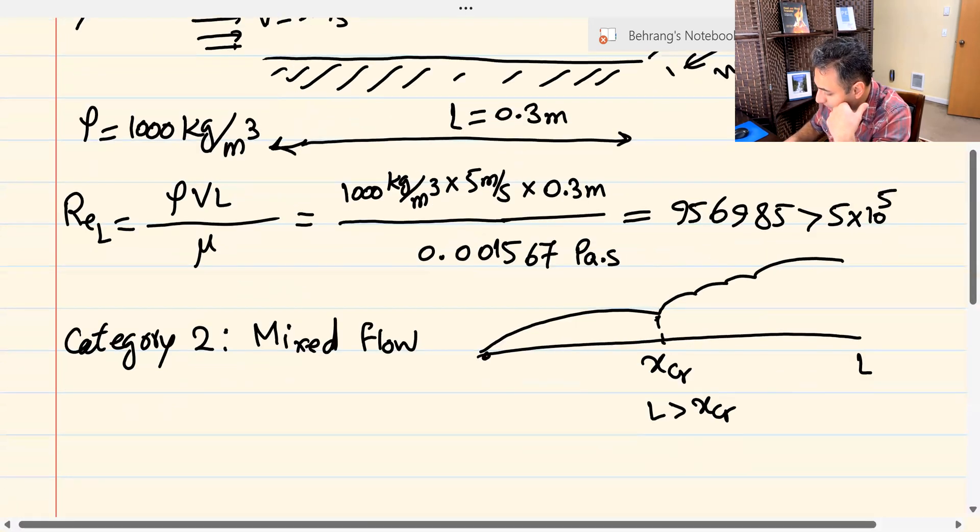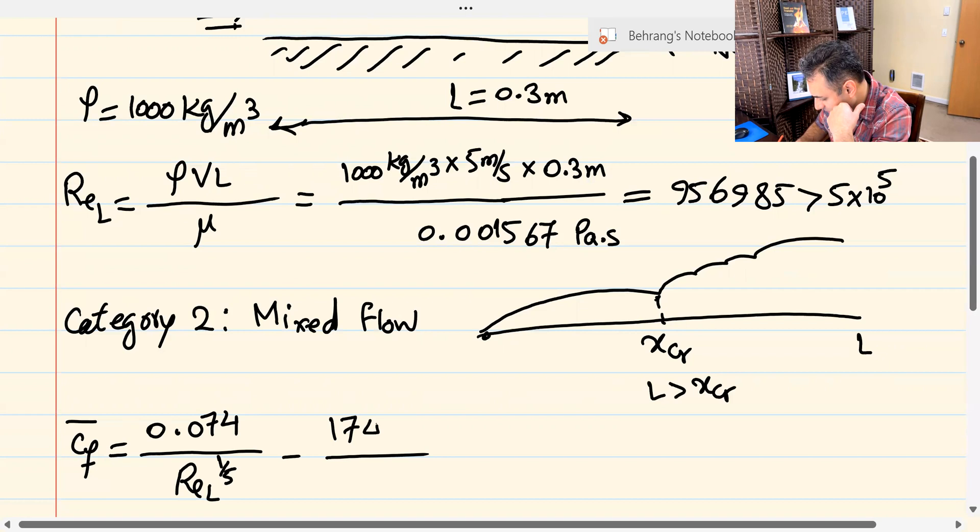So for category two, we have to use the right equation for the average friction coefficient, and that's what we're going to do. So the average friction coefficient, the right equation for it, if you remember from that video, is 0.074 over Reynolds number one-fifth, that's the power, minus 1742 over Reynolds number.